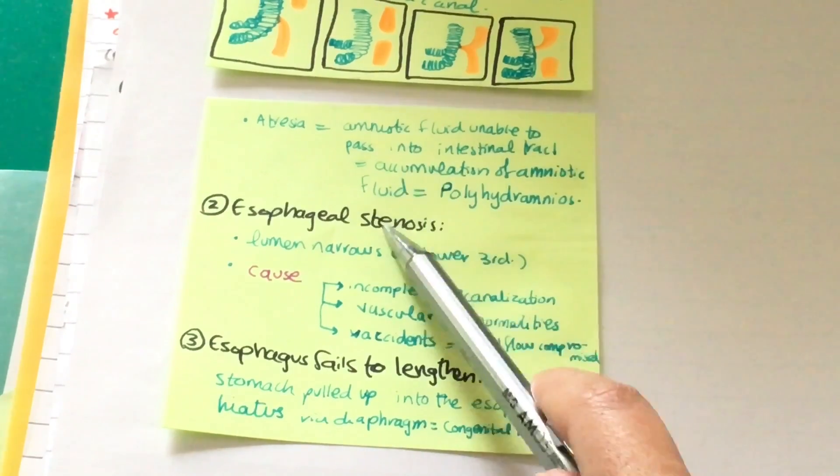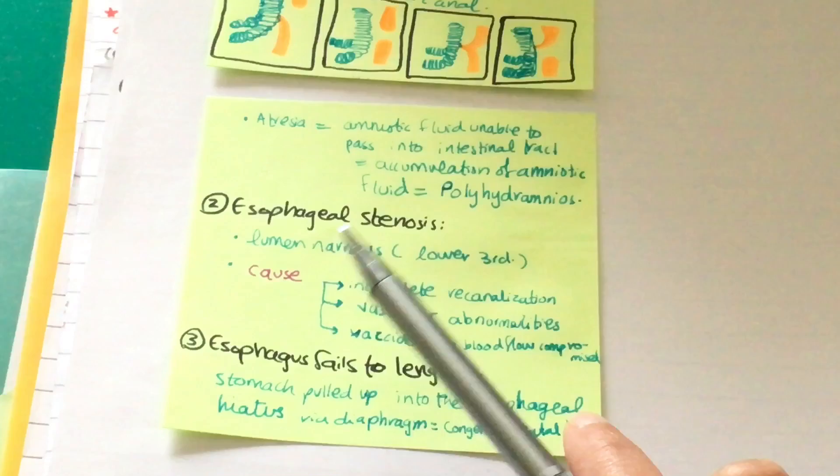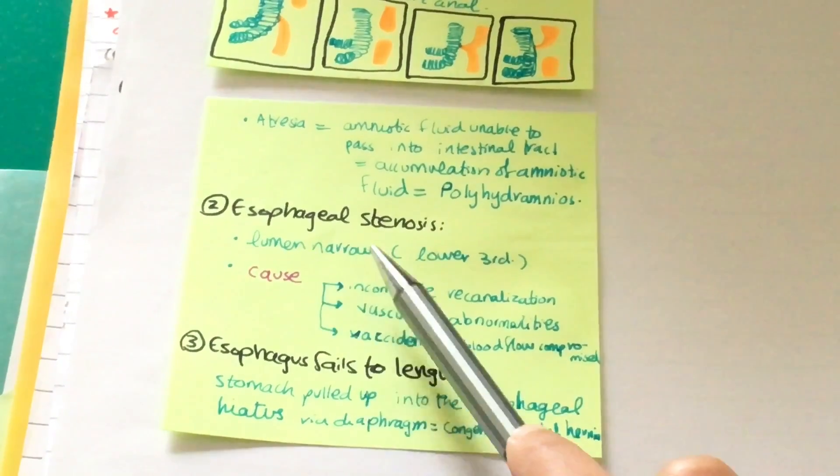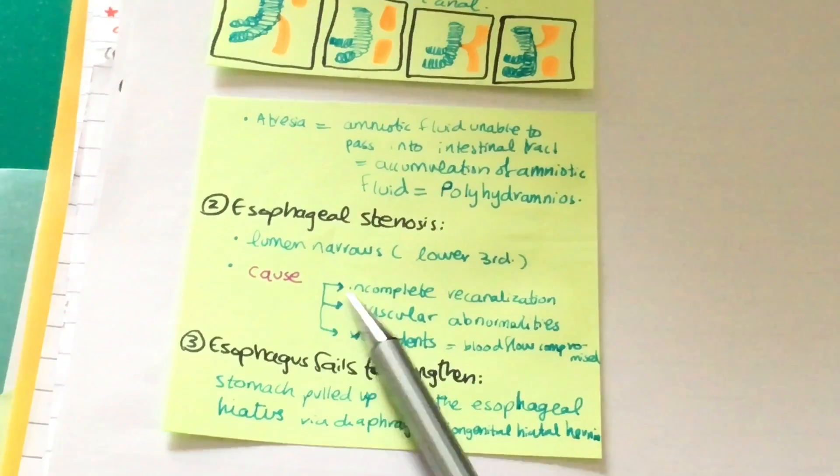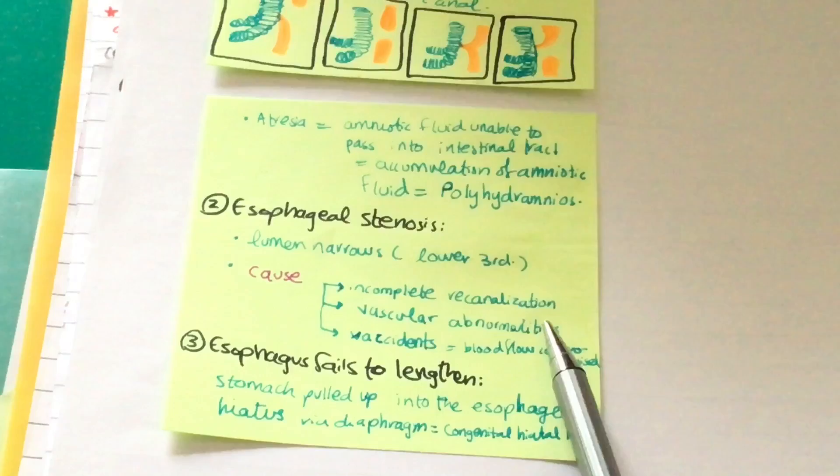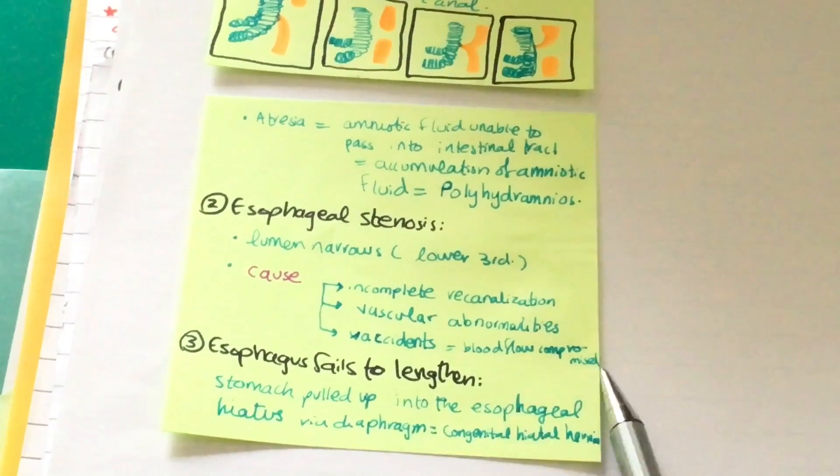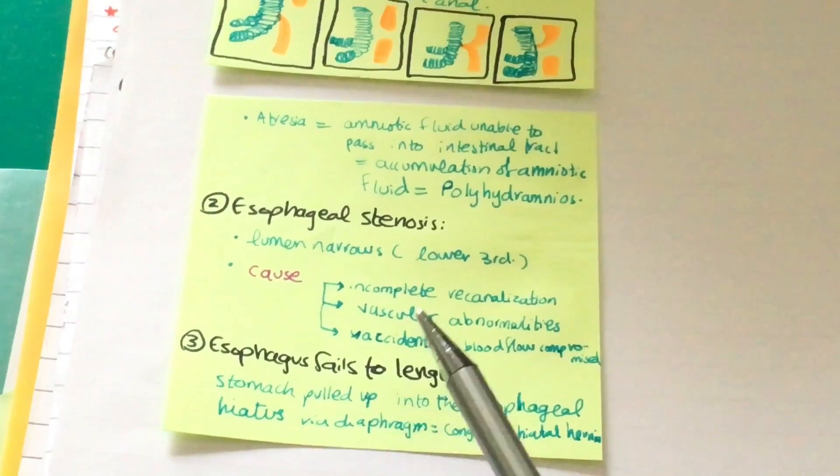Esophageal stenosis is when the lumen narrows in the lower third. The causes are incomplete recanalization, vascular abnormalities, or accidents which lead to compromised blood flow.